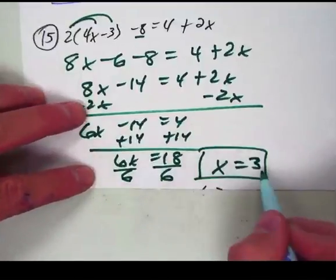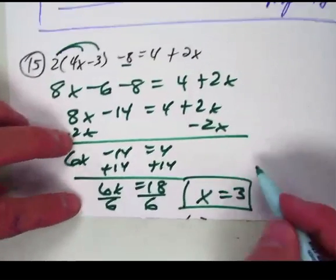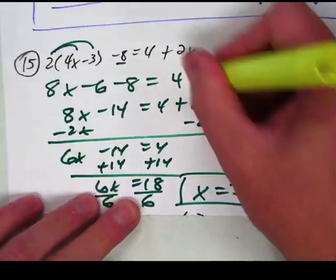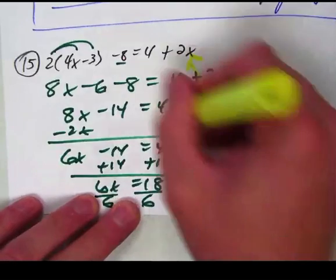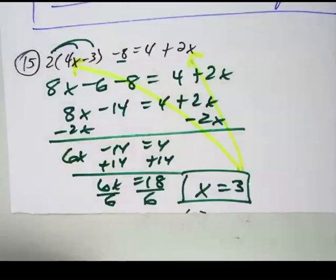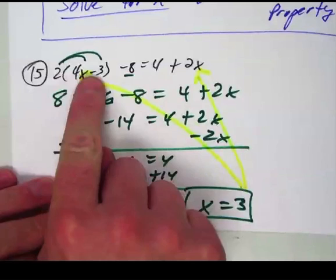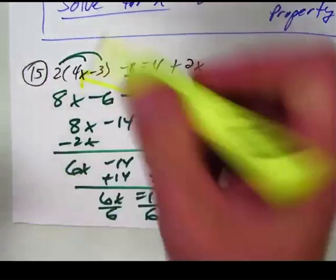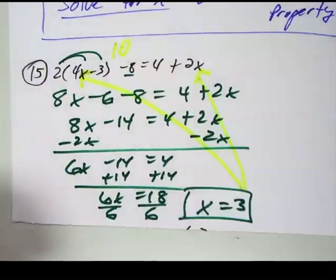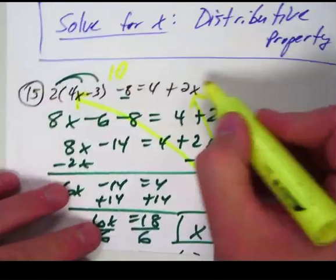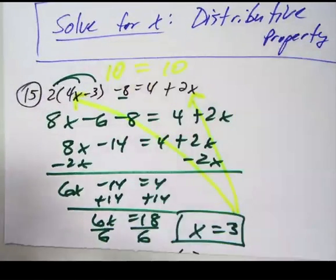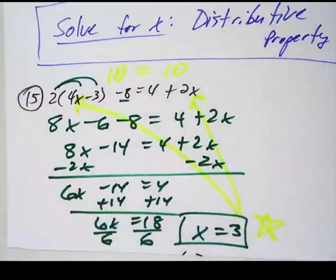The beauty of doing these is that you can take your answer and plug it back in. Wherever you see the letter x in the original problem, I put a 3 in each spot to see if it works out. So 4 times 3 is 12, 12 take away 3 is 9, 9 times 2 is 18, 18 take away 8 is 10 — so this whole side equals 10. On the other side, 2 times 3 is 6, plus 4 is 10. Does 10 equal 10? Absolutely — that is the right answer!